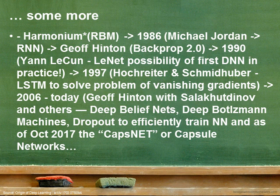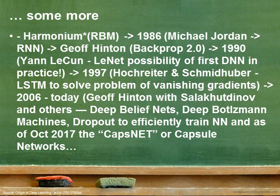Yann LeCun — who now runs Facebook's AI unit — gave us deep neural networks in practice with LeNet. In 1997, LSTM (Long Short-Term Memory) helped fix the vanishing gradient problem. In 2006, Hinton took things further over the last 11 years with deep belief nets, deep Boltzmann machines, dropout, and capsules — a really amazing subject. Capsule networks, which you may have heard of recently, are something super exciting.